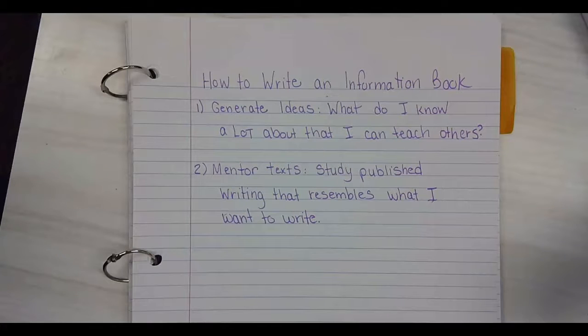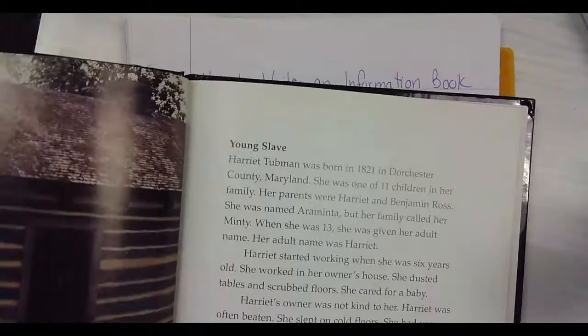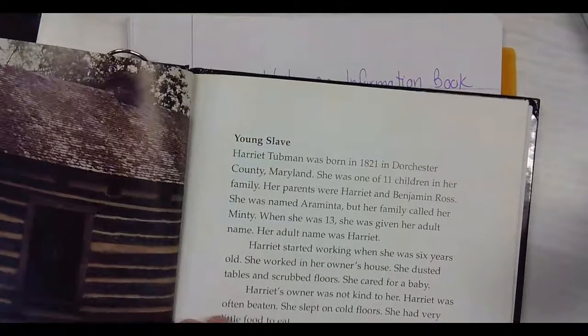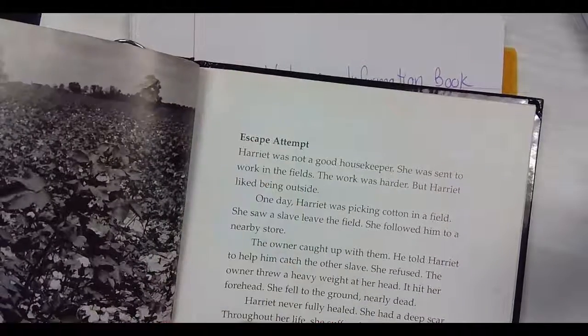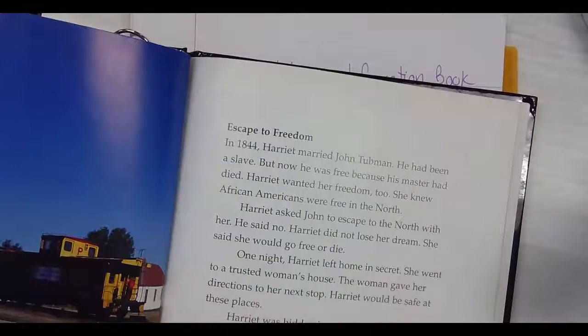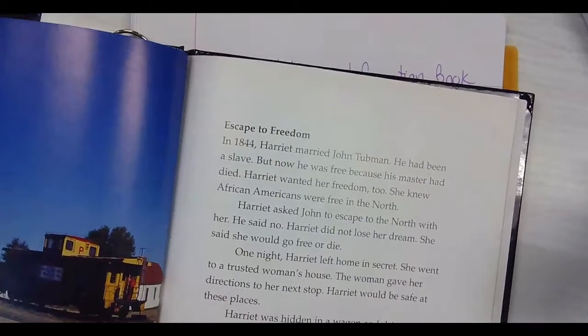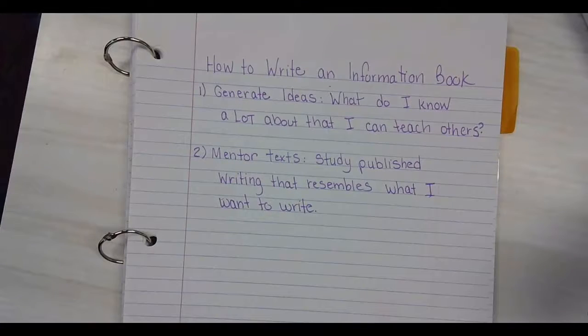I really liked the way this book set it up because this book showed me that I could just do one page instead of several pages. This one was all about the young slave Harriet Tubman. And then the next page was about an escape attempt. And the next page is about escape to freedom. Instead of me worrying about chapters, because usually when you look at a chapter book, your chapters are 5, 7, 10 pages long. But that doesn't necessarily have to be how long our writing is going to be.